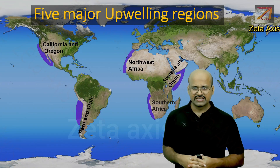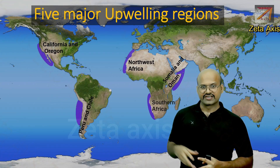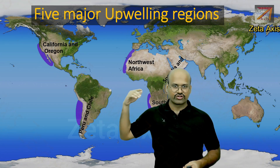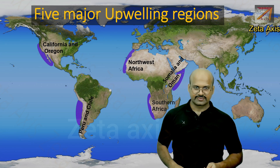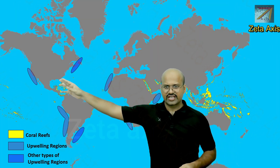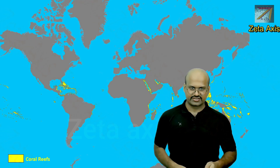Here we can see the five major upwelling regions, which are on the western coasts of continents. In these regions there are no coral formations. If you compare both maps, you will see that all regions with upwelling have no corals.